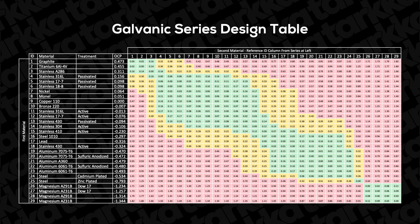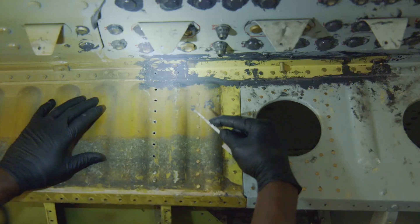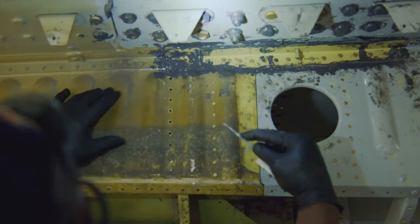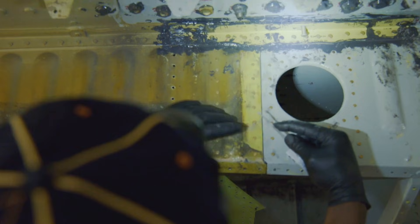Another consideration is galvanic corrosion. When materials that are far apart on the galvanic series are in contact and in the presence of an electrolyte, a galvanic cell is formed. In this case, accelerated corrosion occurs on the more anodic material. If the anodic material happens to be small or thin, this corrosion can be extremely severe.